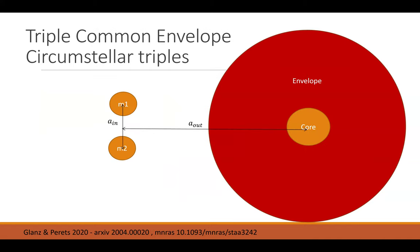We can divide the triple common envelope scenario into two main configurations. The first — which I will mostly talk about today — is the circumstellar case, in which we have a giant as our primary star. It has an inner binary system as its companion, and we call it the inner binary due to its internal motion inside the envelope. It has an inner separation, eccentricity, and so on. Its center of mass forms another binary system together with the giant. We can look at this configuration as if we took the binary common envelope phase and split the companion into a binary system.